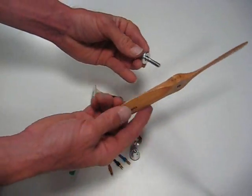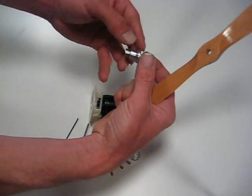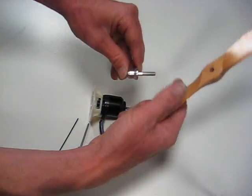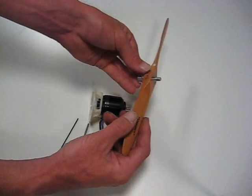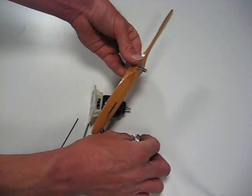Now, you insert the prop. This is the back end that's going to go towards the motor. Here's your wood prop, letters facing forward. Insert it onto the hub here.